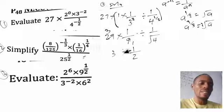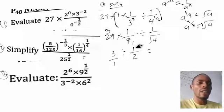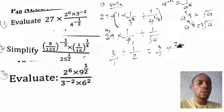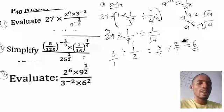This part is in fraction form, so make 3 also a fraction: 3 over 1. Then change this division to multiplication — you take the inverse of the second part. So 1 over 2 becomes 2 over 1 when inverted. That gives us 3 over 1 multiplied by 2 over 1, which is 3 times 2 equals 6, over 1 times 1 equals 1. So the answer to question one is equal to 6.